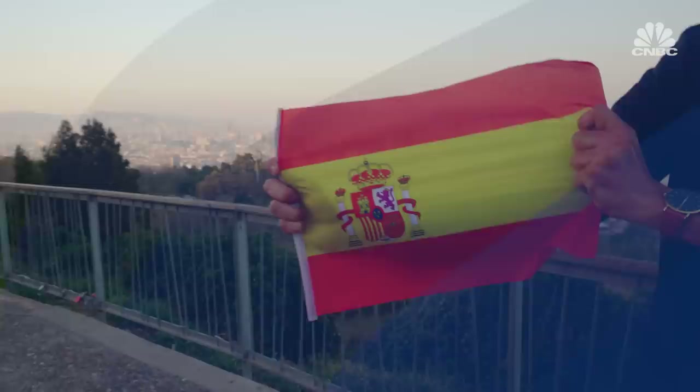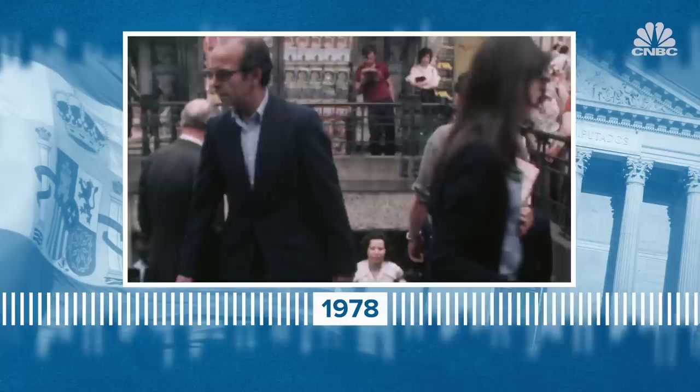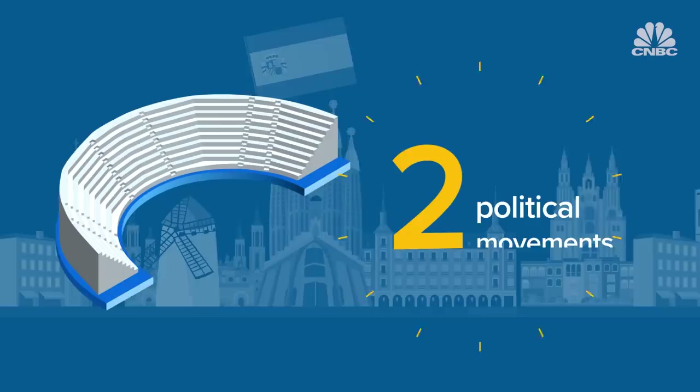Some experts say Spain's constitution is the main reason for the country's political uncertainty. The document was drawn up in 1978 after the death of long-time dictator Francisco Franco. It was designed to create a stable democracy, to move power away from Madrid and grant it to the provinces and regions. It helped to strengthen the role of political parties but weaken the influence of individual citizens. As a consequence, just two political movements have dominated almost ever since.